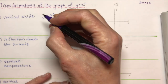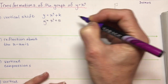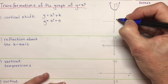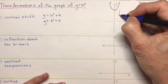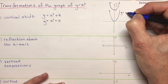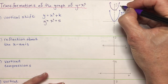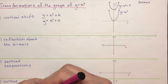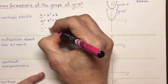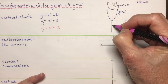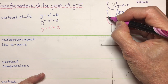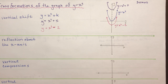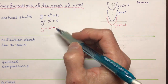So y equals x squared plus 5 would have the vertex at 0 and 5. The original function would be like this — so here's y equals x squared, and this would be y equals x squared plus 5. And y equals x squared minus 2 goes down 2, just exactly what it says. So vertical shift is pretty basic — you move the whole thing up or down, and how far it goes depends on the value of k.